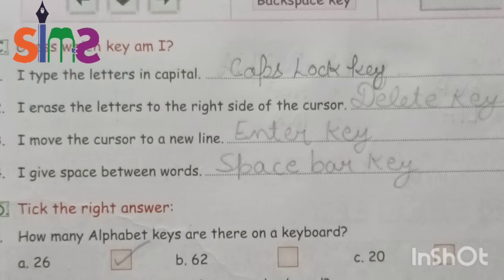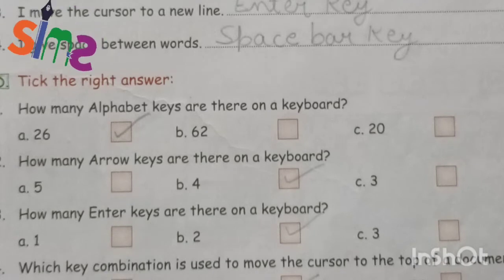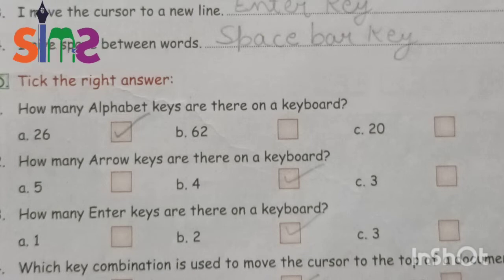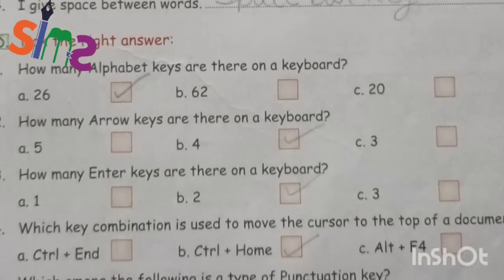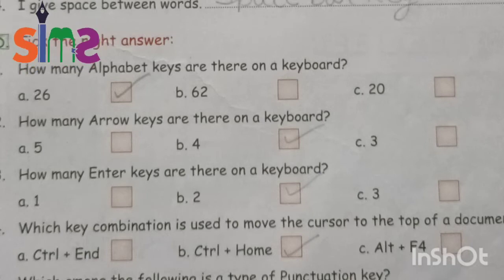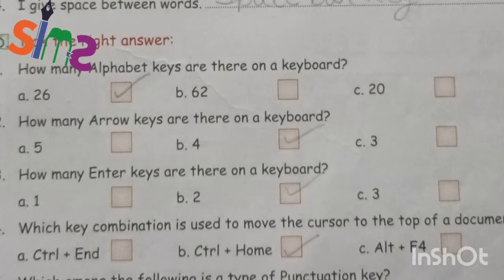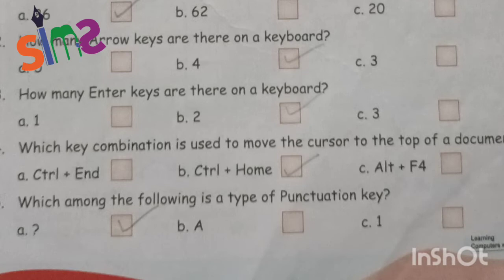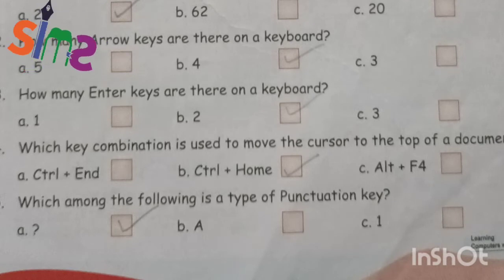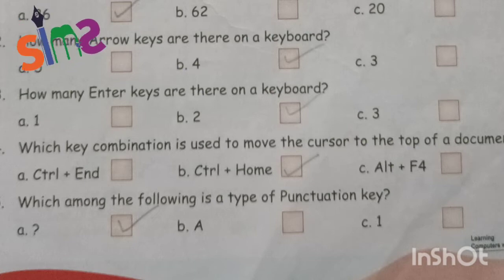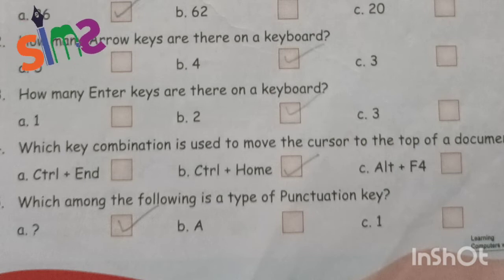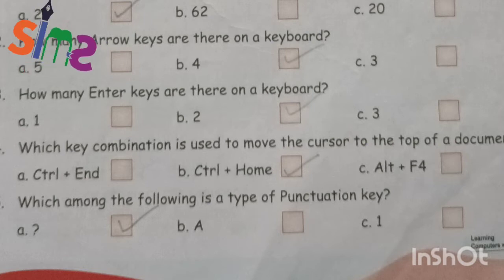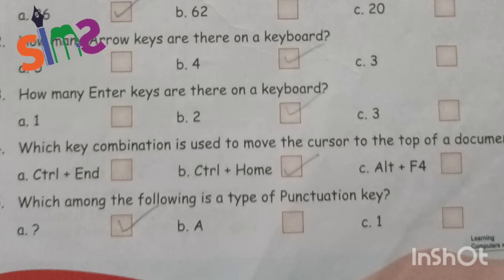Last is: I give the space between words — space bar key. How many alphabet keys are there on the keyboard? A: 26, B: 62, C: 20. The answer is 26, so we will click on 26. Second: how many arrow keys are there on the keyboard? A: 1, B: 2, C: 3. The answer is B, 2. We will click on 2. Fourth: which key combination is used to move the cursor to the top of the document? A: Control plus End, B: Control plus Home. We will click on B.